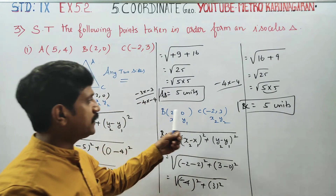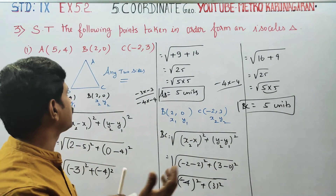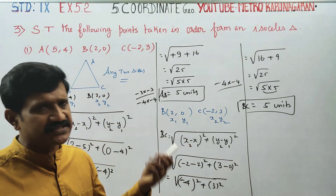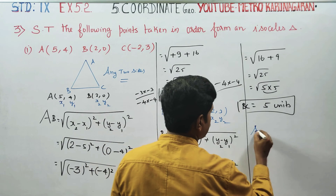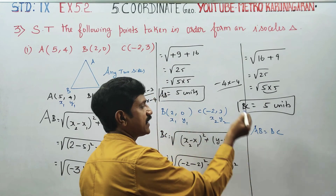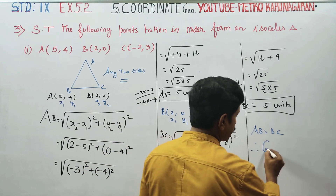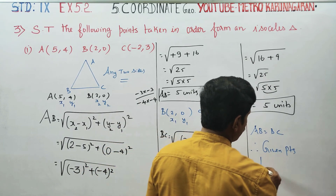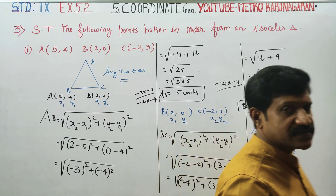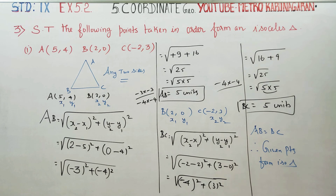We have AB and BC both equal to 5 units. Therefore AB equals BC. Therefore, the given points form an Isosceles Triangle, where two sides are equal. If AB and BC are the two equal sides among the three sides, the triangle is called an Isosceles Triangle. Thank you.